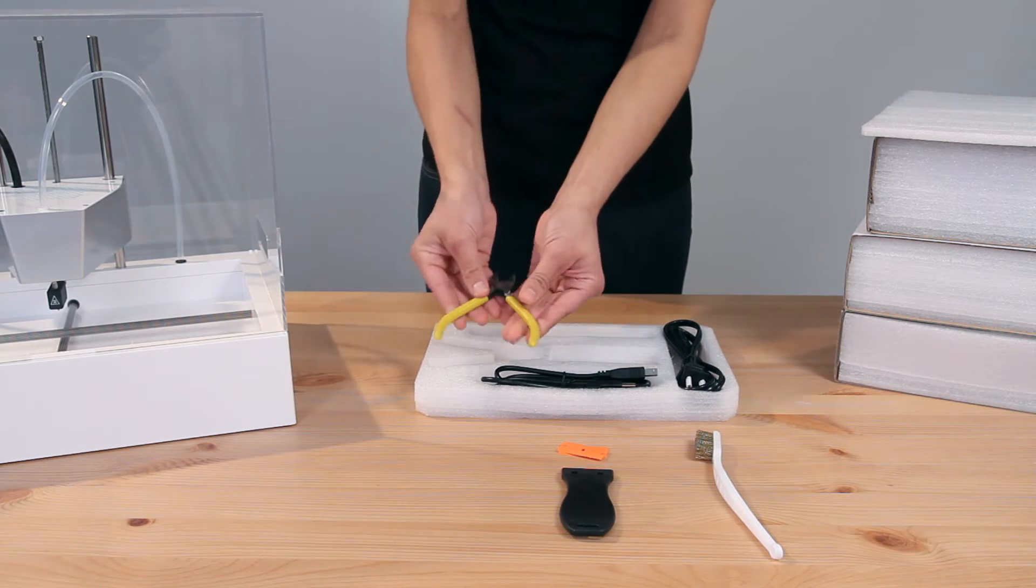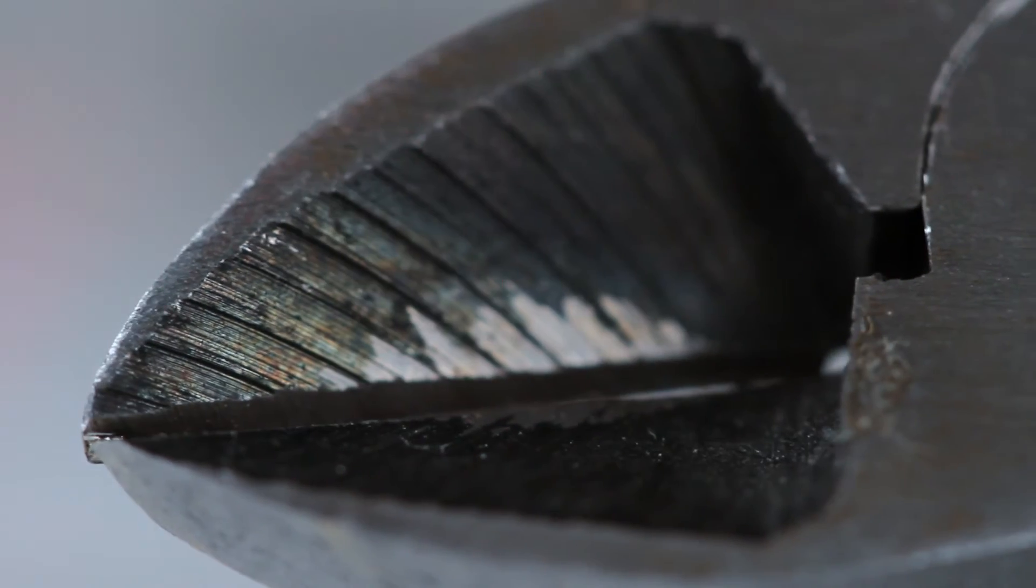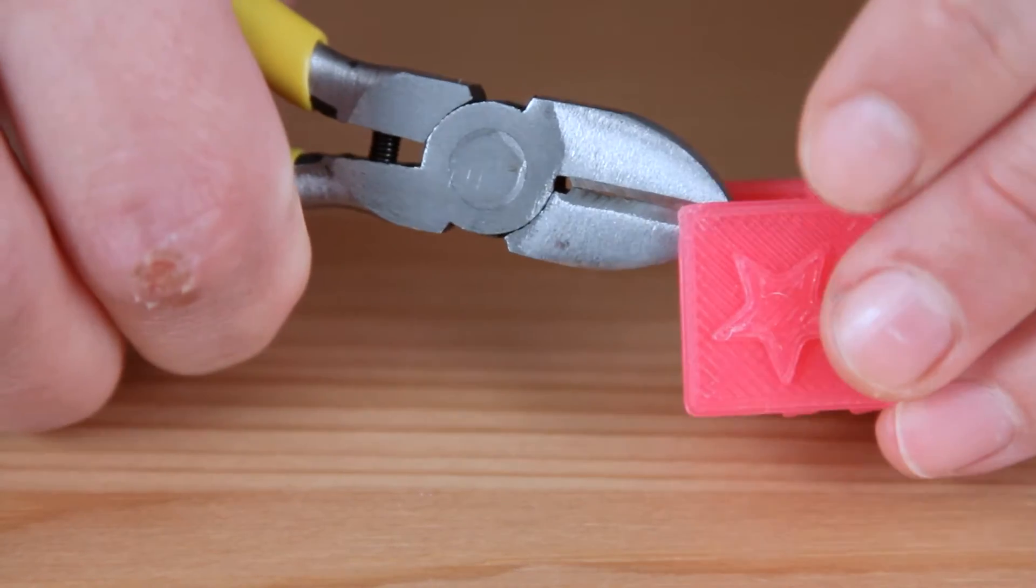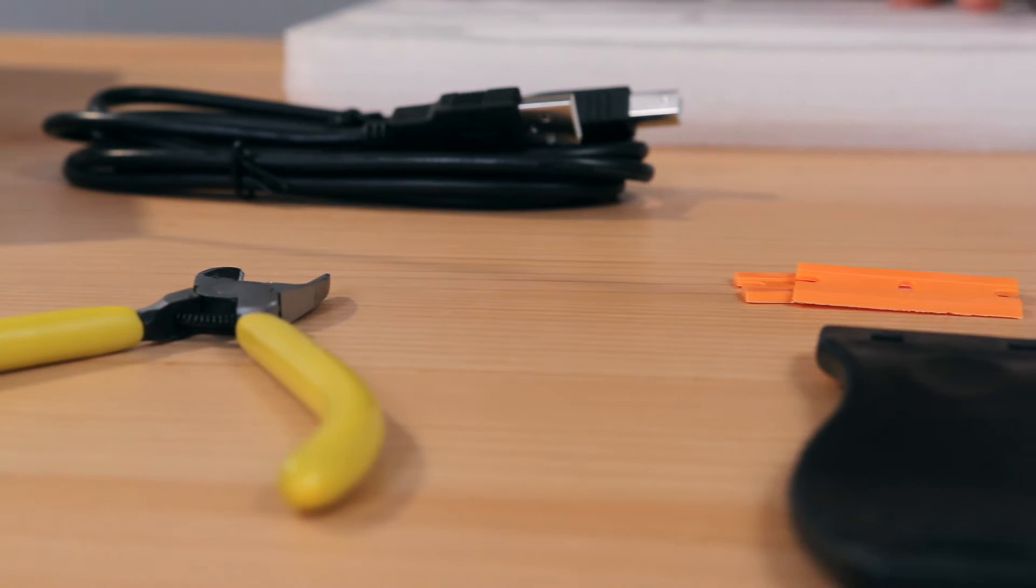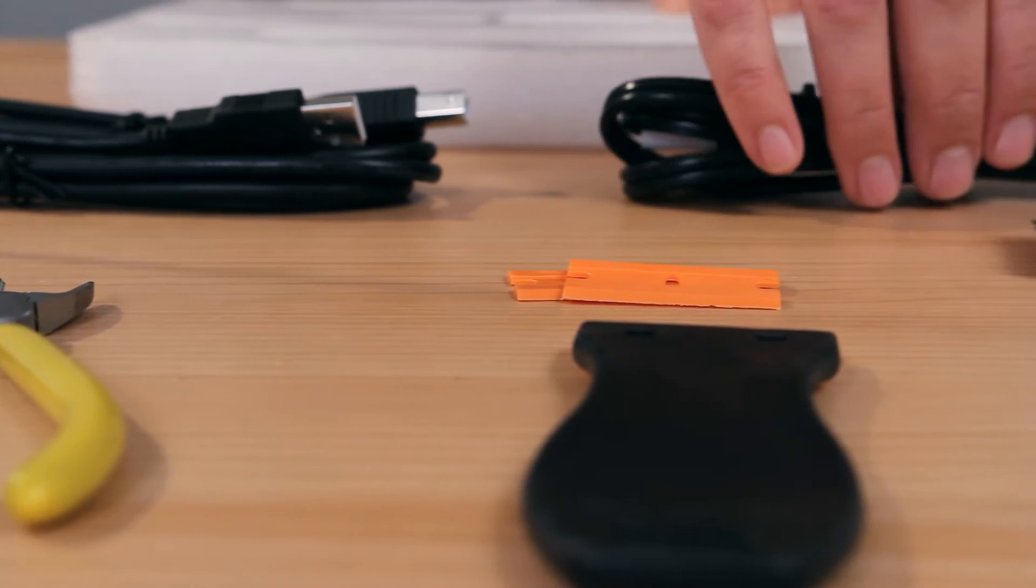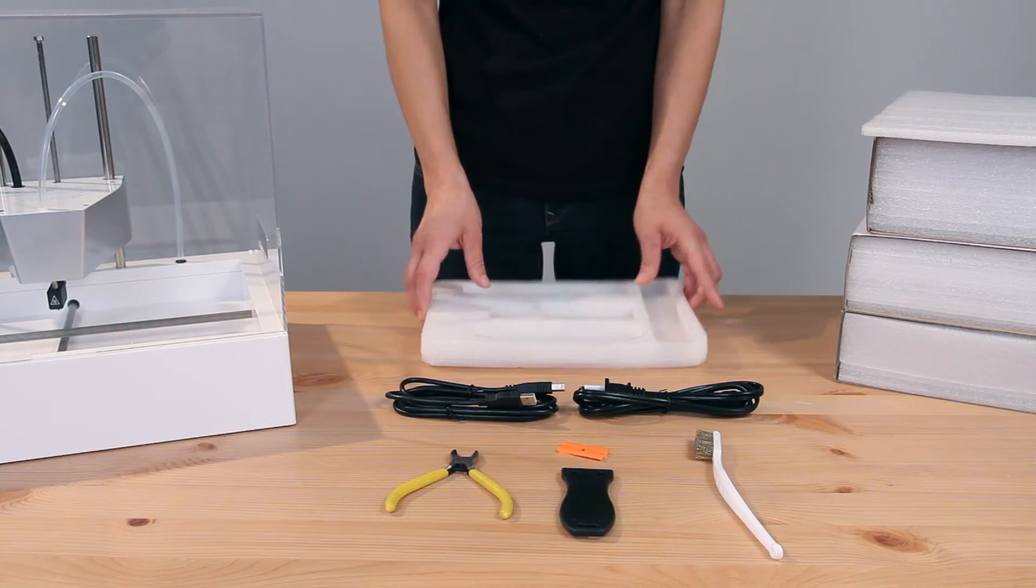Here are your brand new clippers. You'll use these to cut your filament and to clear off any excess print support parts. Here is your USB cord and this is your power cord. Put those off to the side because we'll come back to those later.